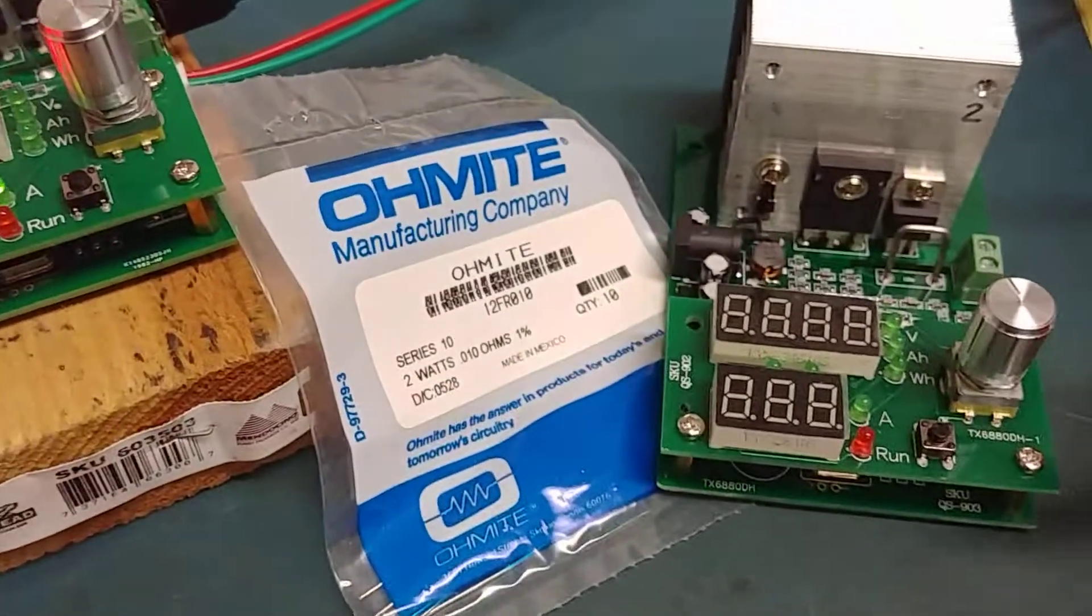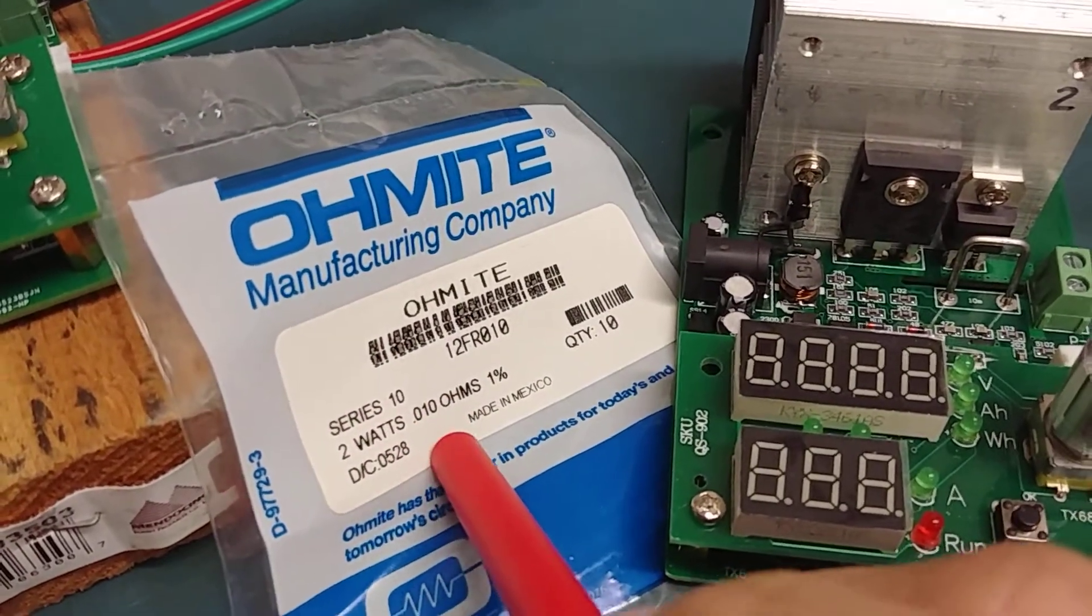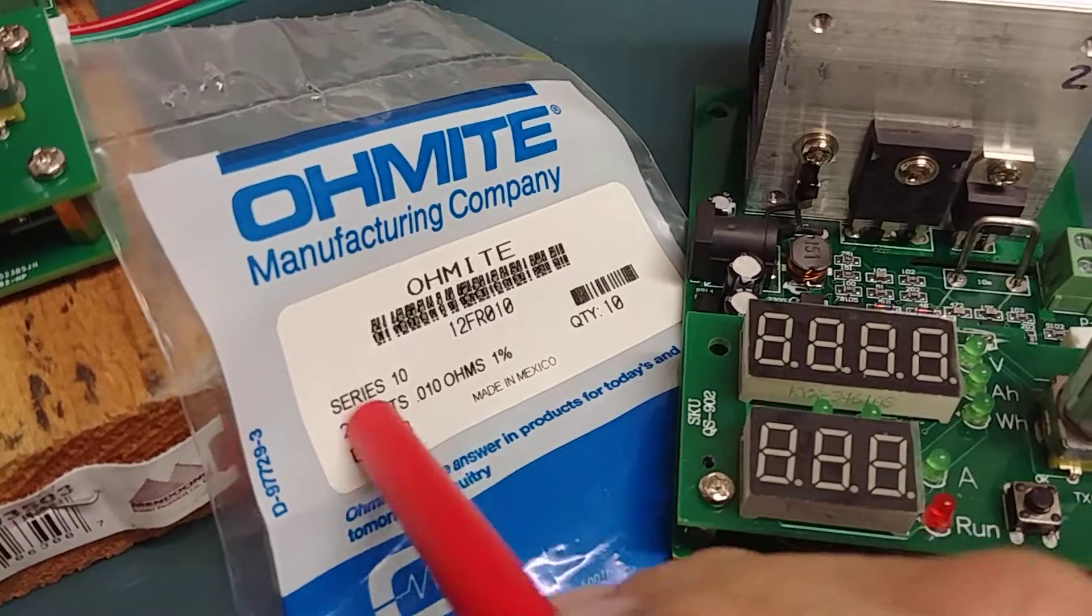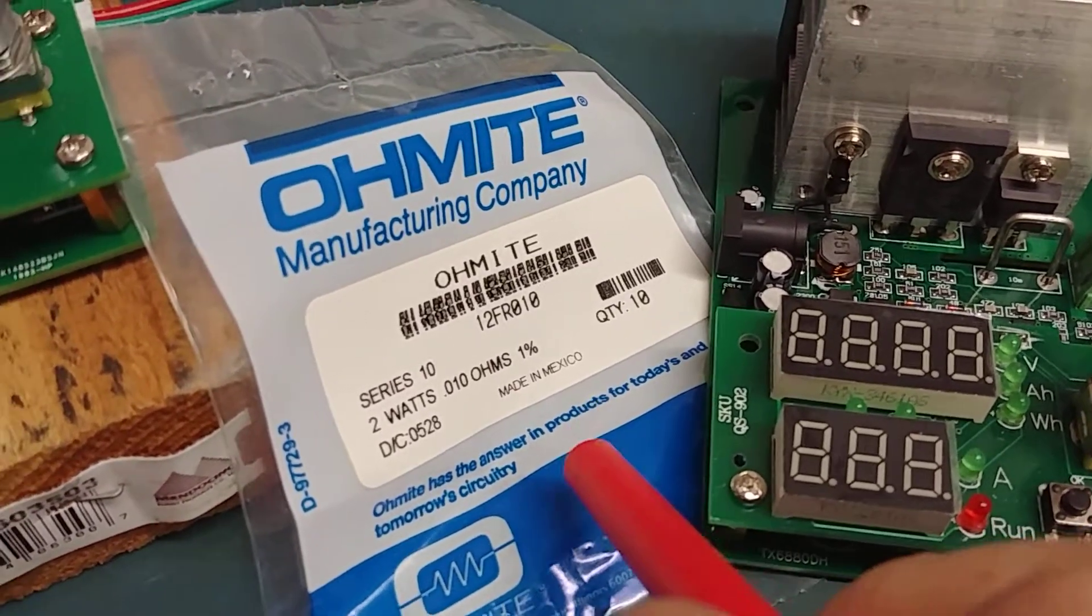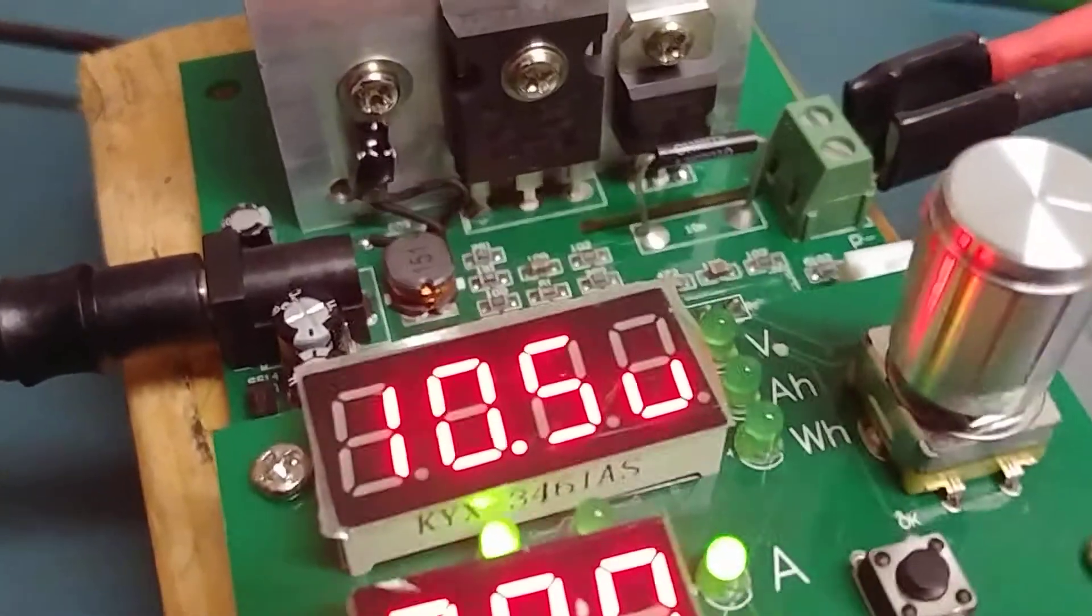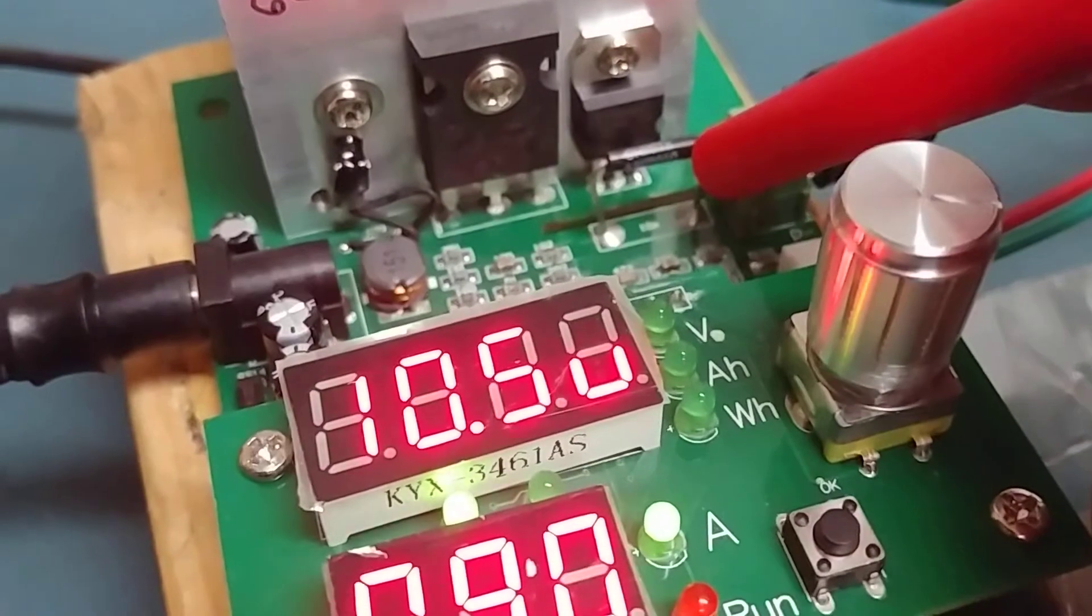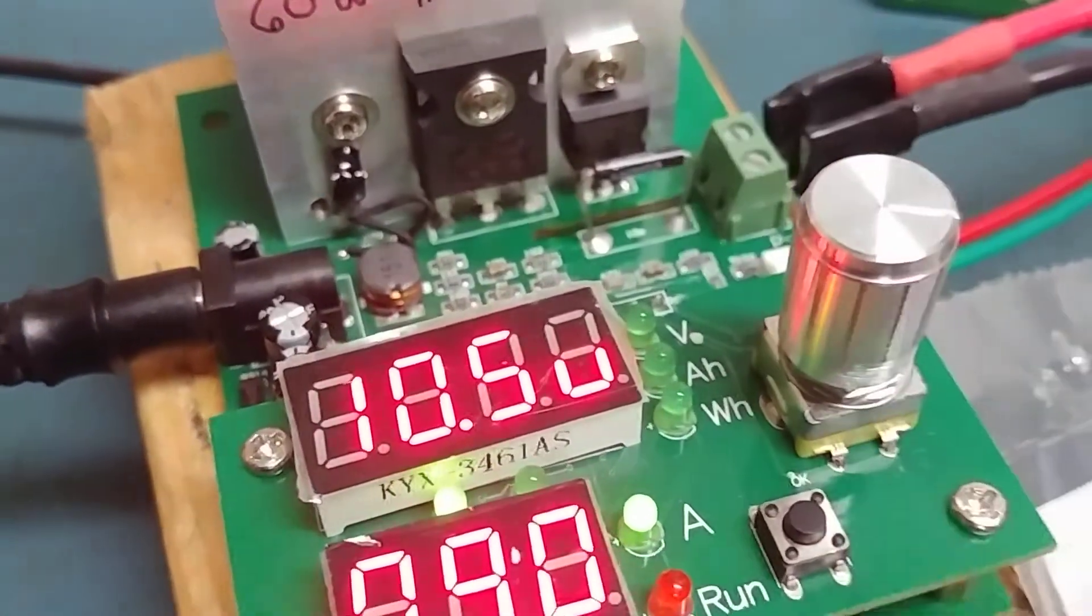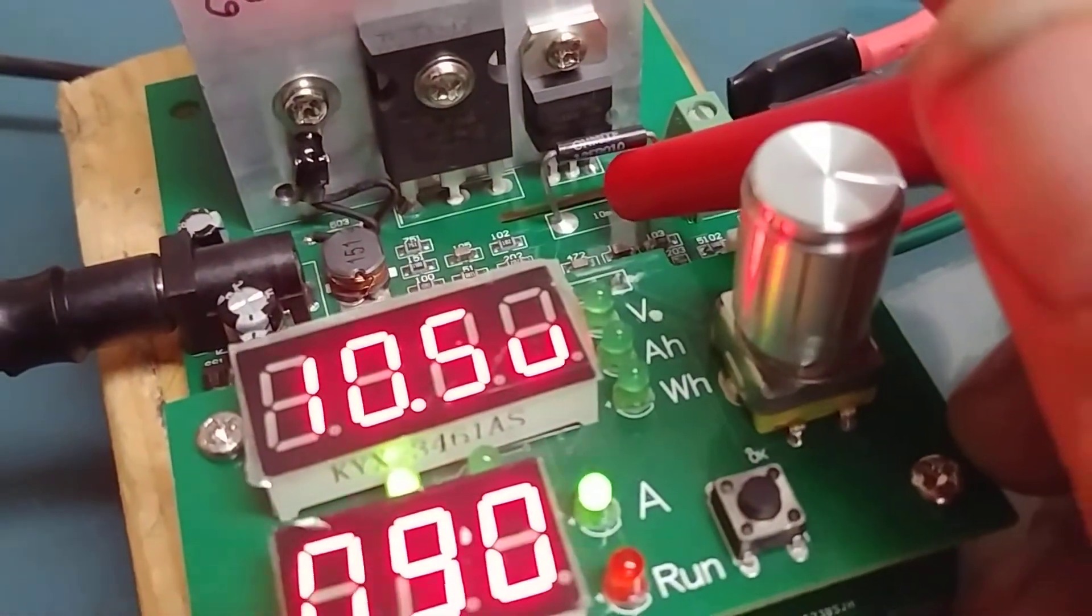So I went ahead and got some resistors from Ohmite, some actual 10 milliohm resistors, 1%. I calculated out that 2 watts would do it. And so this is the first one I just did this morning. See if we can get that thing to dial in. As you can see right here, I put the resistor in and I did my first test.